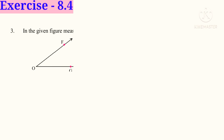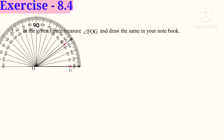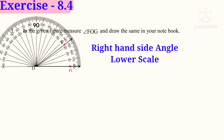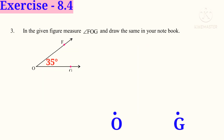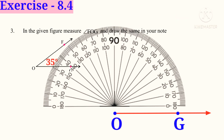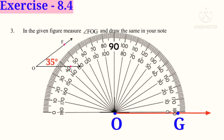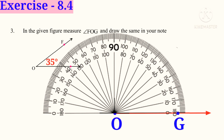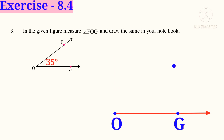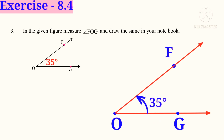Now Exercise 8.4, third problem: in the given figure, measure angle FOG and draw the same in your notebook. Place the protractor on the line OG at center O. Observe that OF is pointing 35 degrees on the protractor. Take an initial point O, another point G, and draw an initial ray through OG. Place the protractor on OG at center O, and on the lower scale — 0, 10, 20, 30, after 5 lines — put a point at 35 degrees. Name it F and draw the final ray through OF. Angle FOG is 35 degrees.